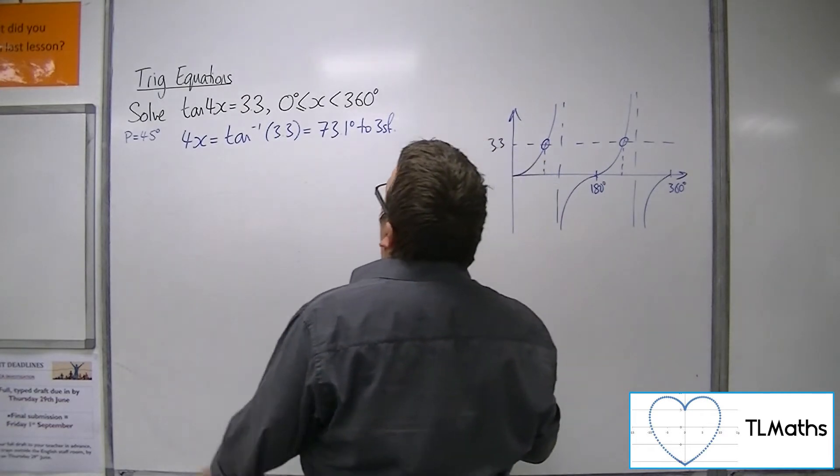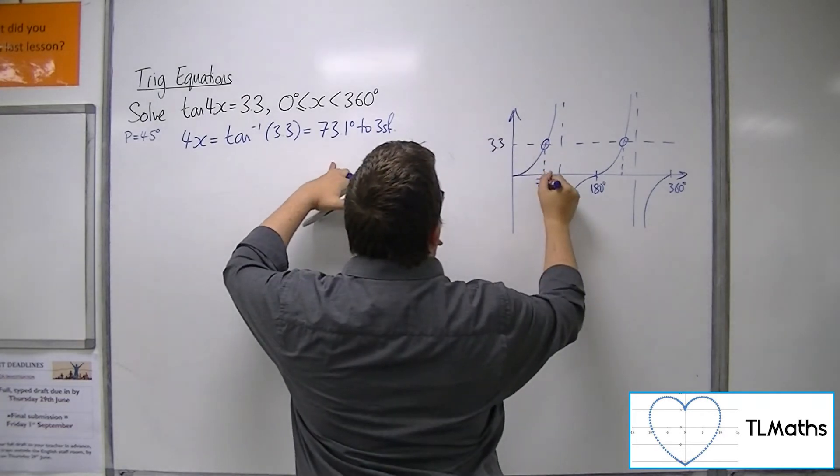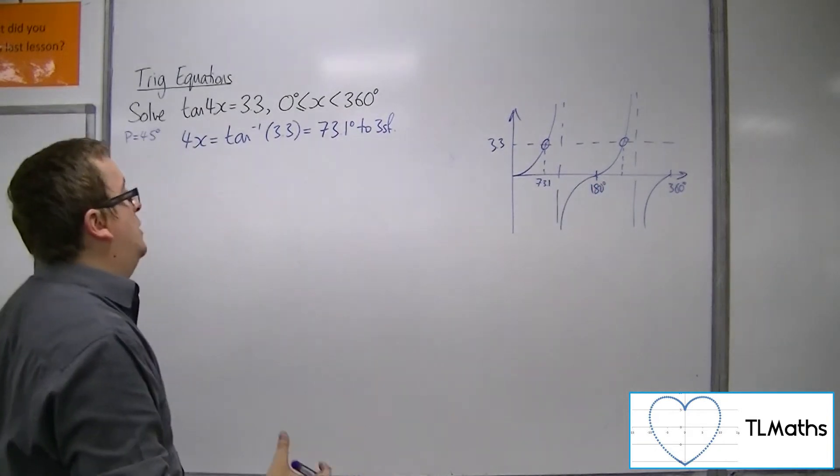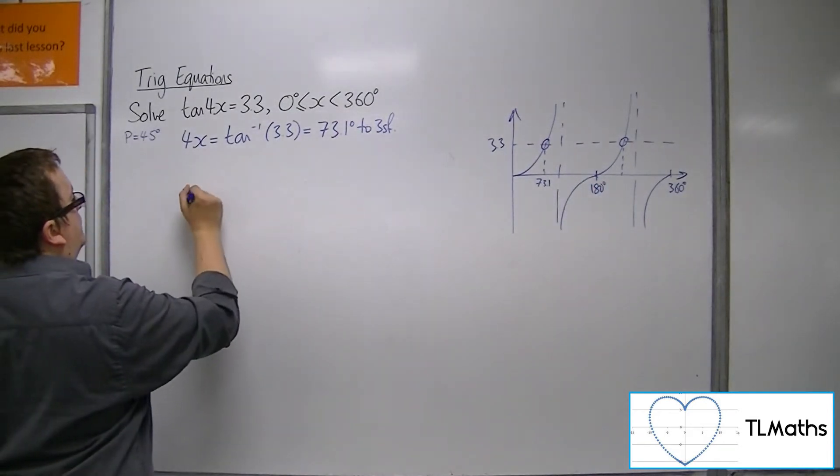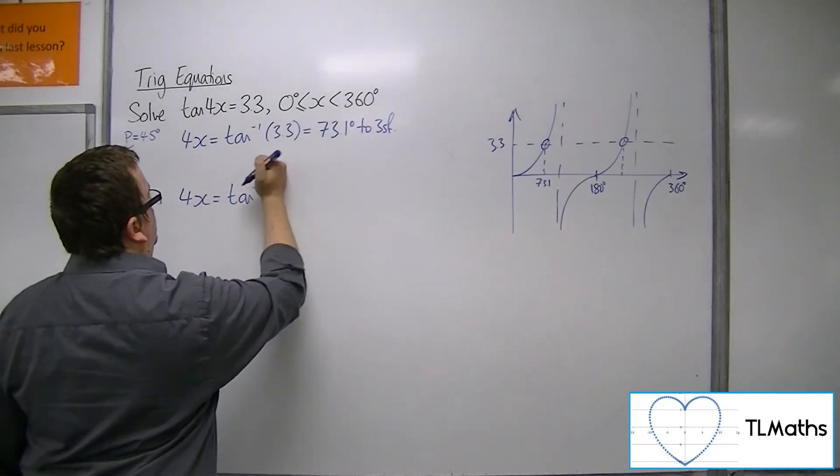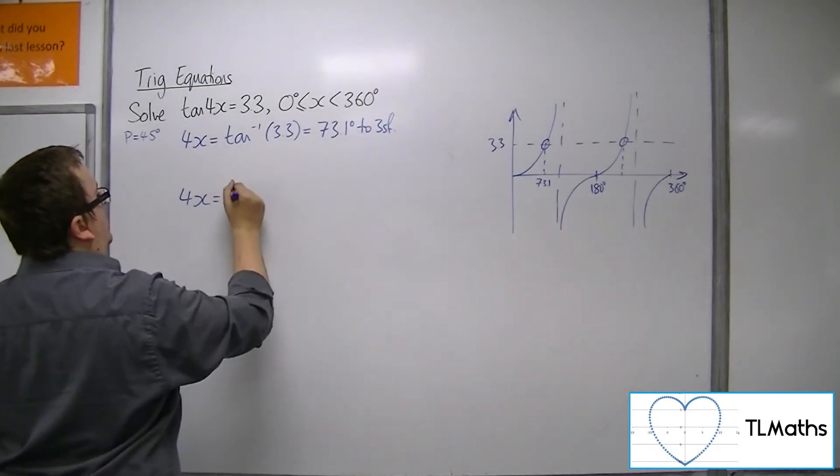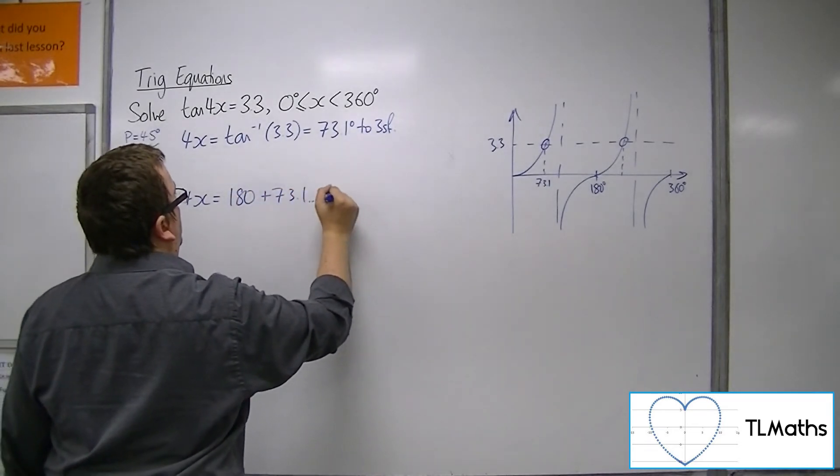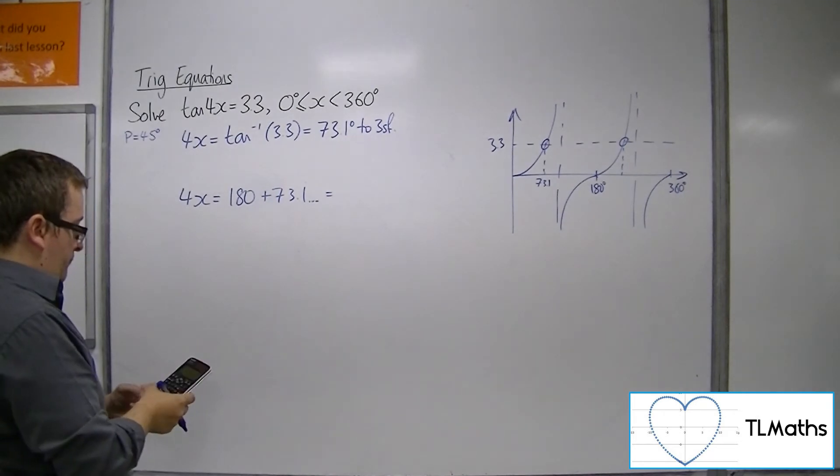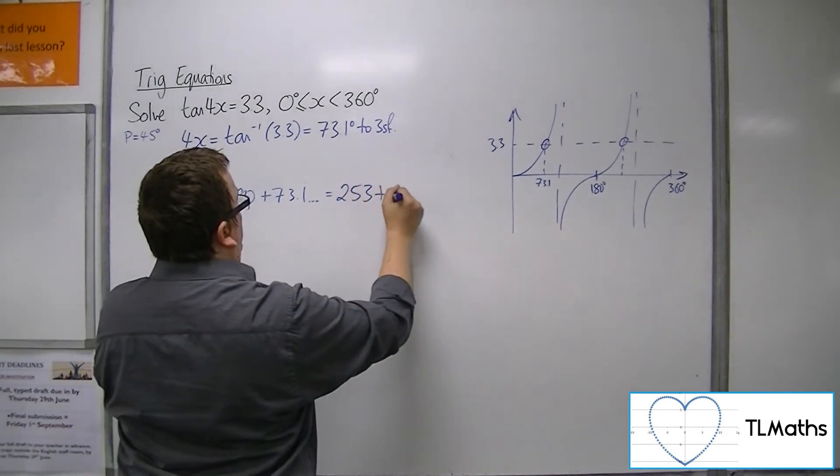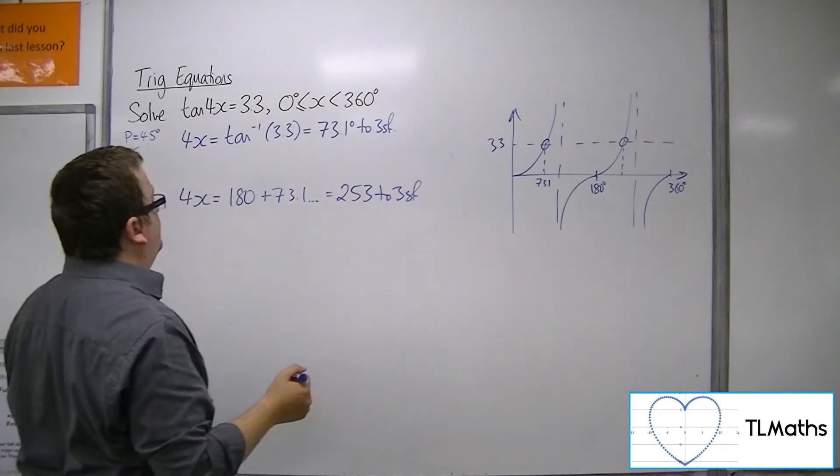Okay, so we can get our first solution there, 73.1. We can get the next solution by adding on 180. 180 plus the 73.1 is 253 to 3 sig fig.